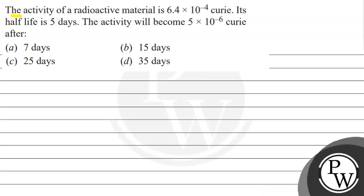Let's read this question. The question says that the activity of a radioactive material is 6.4 into 10 to the power minus 4 curie. Its half life is 5 days. The activity will become 5 into 10 to the power minus 6 curie.